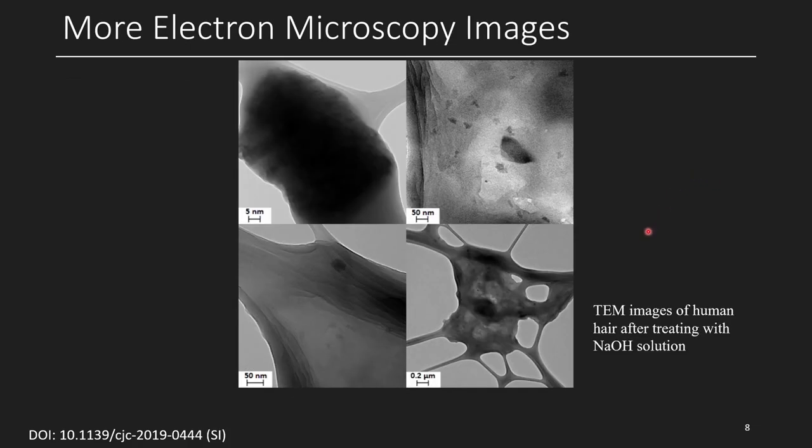If you'd like to see a couple other images, here's some transmission electron microscope images of the human hair after being treated with sodium hydroxide solution. They provided these in their supplemental information. This shows that the hair has been treated and it may enable the metals to be released into solution, and maybe that could form nanoparticles under a reducing environment.